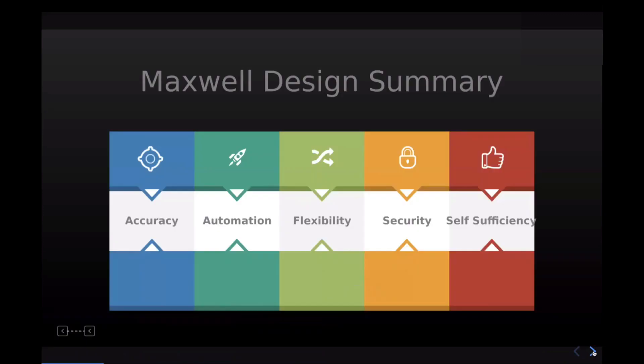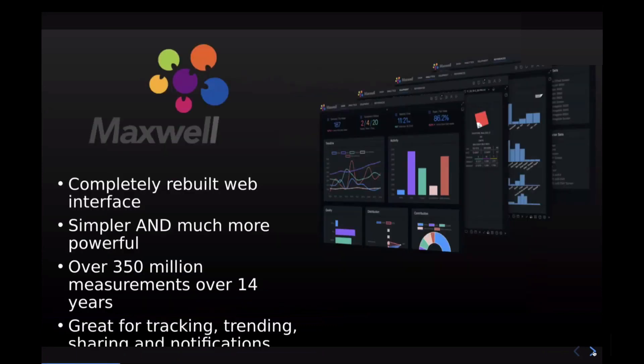Our design strategy is to keep things as simple as possible. As you can see here, we have some very simple ideas behind what we want to do, and we keep our eye on those as goals as much as we possibly can. We've completely rebuilt the web interface. We started Maxwell basically in 2007, 2008. Since then, we have like 350 million measurements in the system, and we can use those measurements to our advantage in a number of different ways.